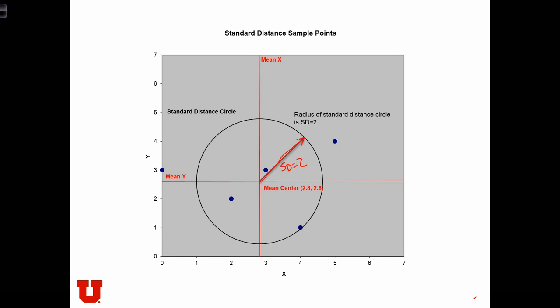So here's the circle, and the length of this radius is equal to the standard distance. So the length of that radius is 2. And this circle tells us, in general, how far away the points are from the mean center.